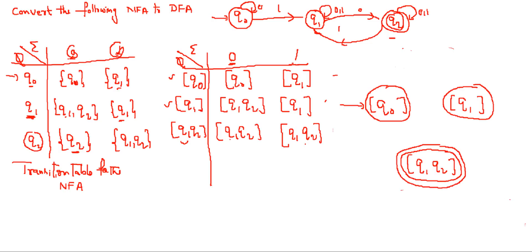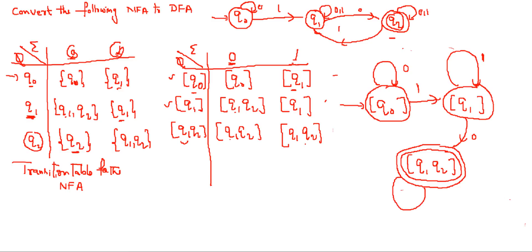Now we will define the moves from the DFA. Applying 0 on Q0 goes to Q0. Applying 1 on Q0 goes to Q1. Applying 0 on Q1 goes to {Q1, Q2}. Applying 1 on Q1 stays on Q1. Applying 0 on {Q1, Q2} goes to the same state {Q1, Q2}, and for input 1, also goes to the same state {Q1, Q2}. This is the diagram for the NFA equivalent DFA.